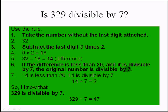Therefore, the number 329 is divisible by 7. I know that 329 is divisible by 7. It is a little tricky — rather, we can just divide it instead of going through the rule. 7 is a tricky rule; you may skip it.